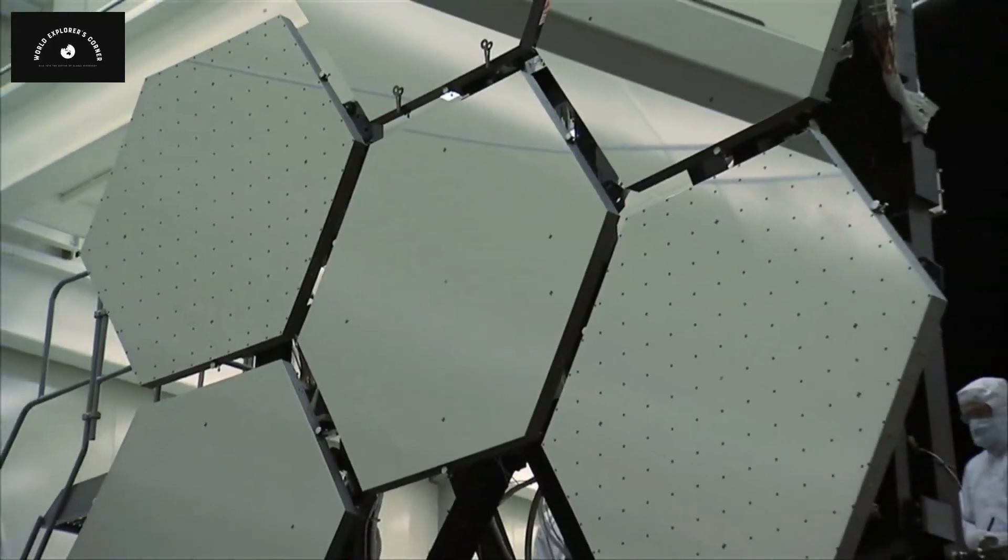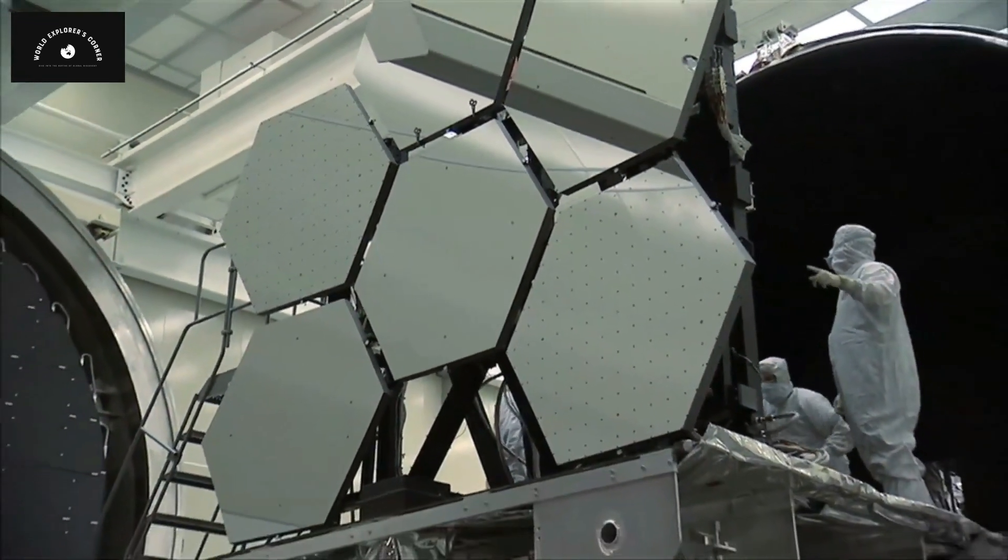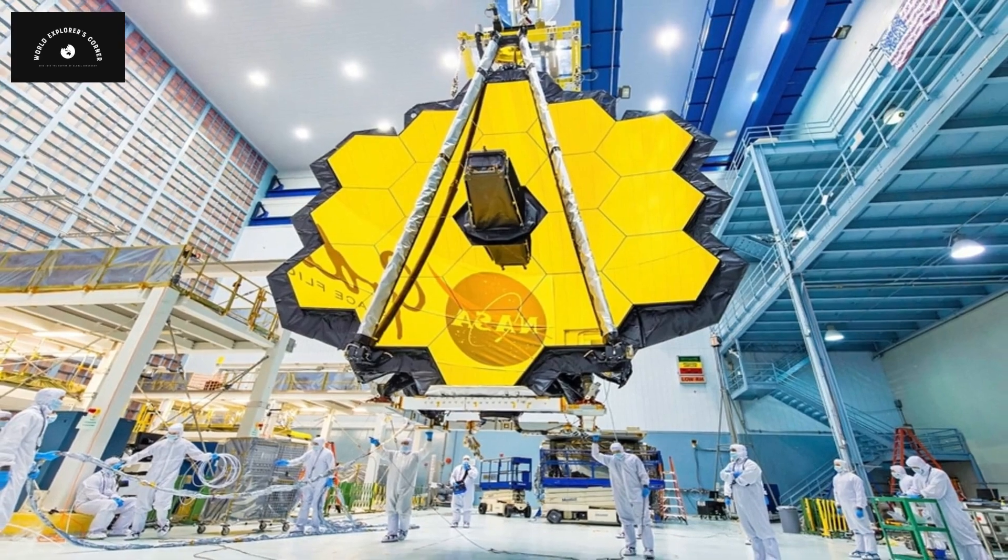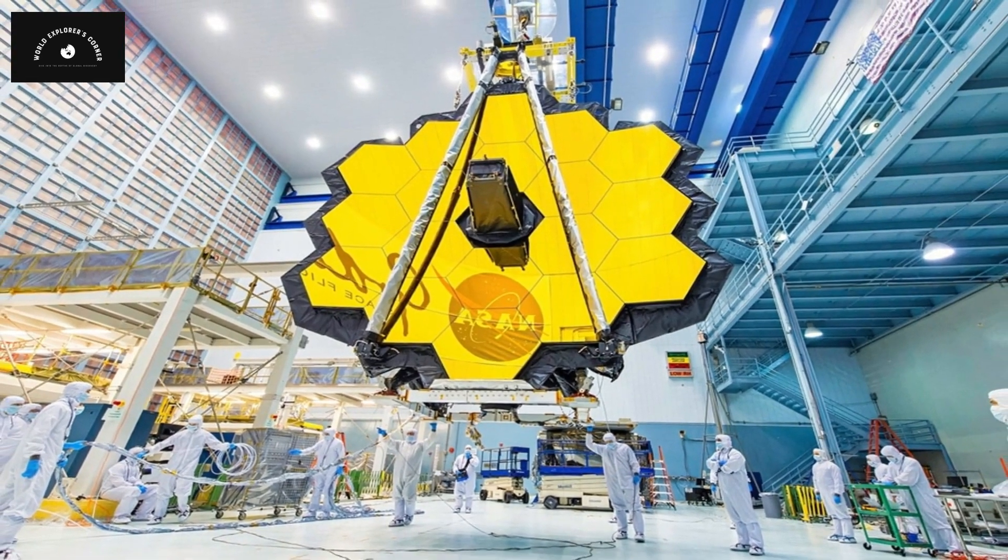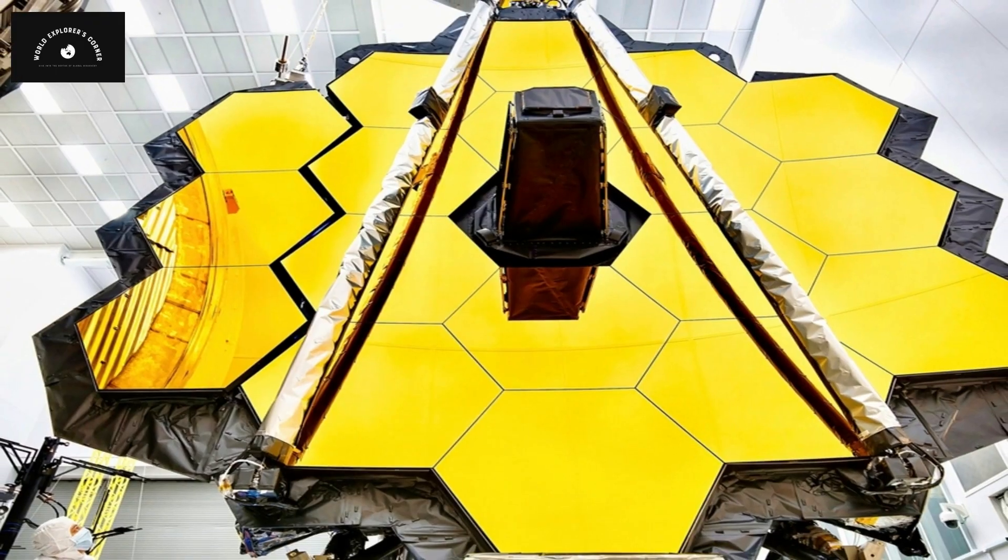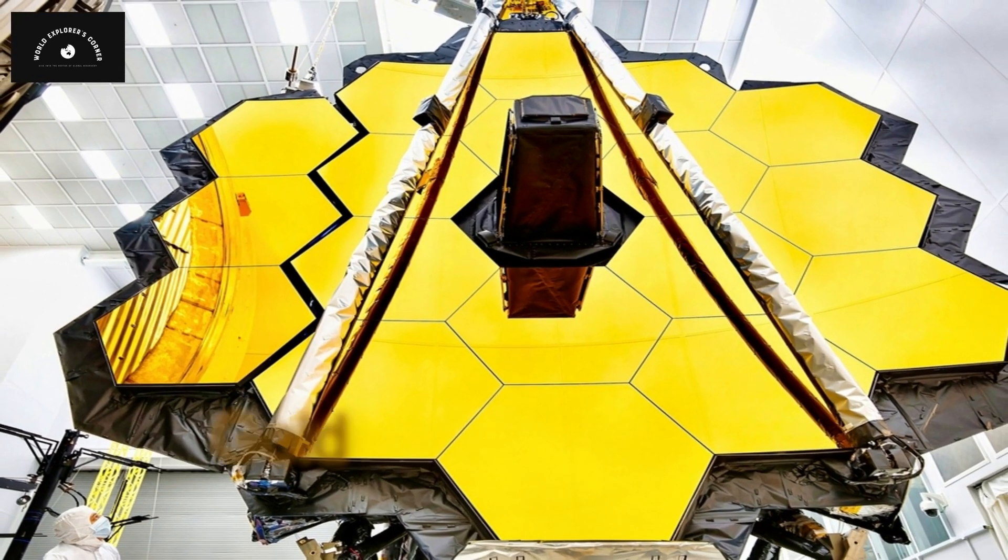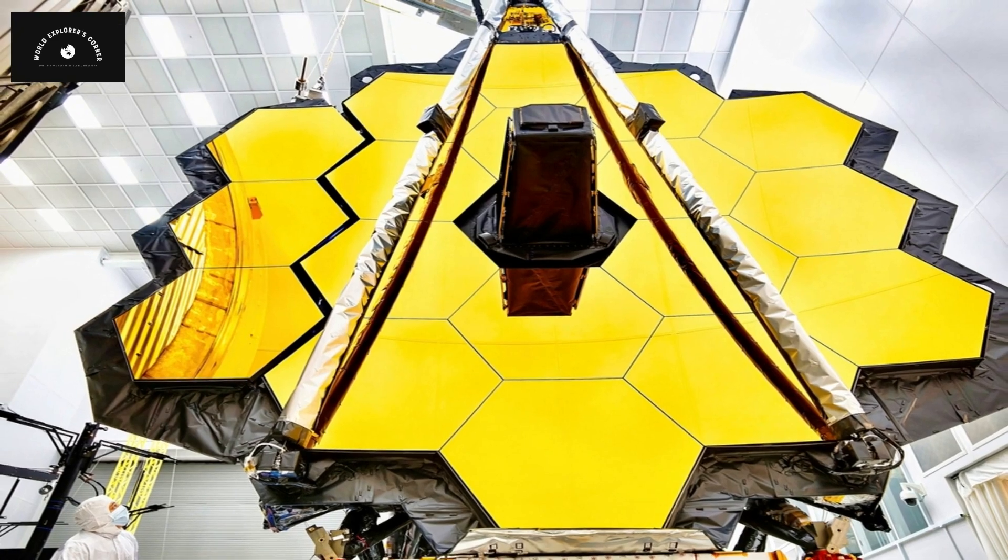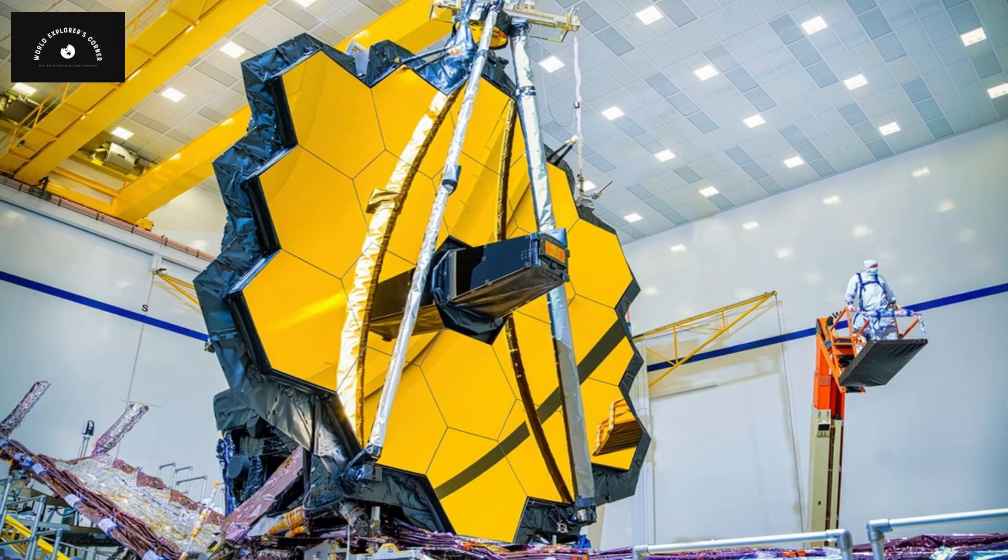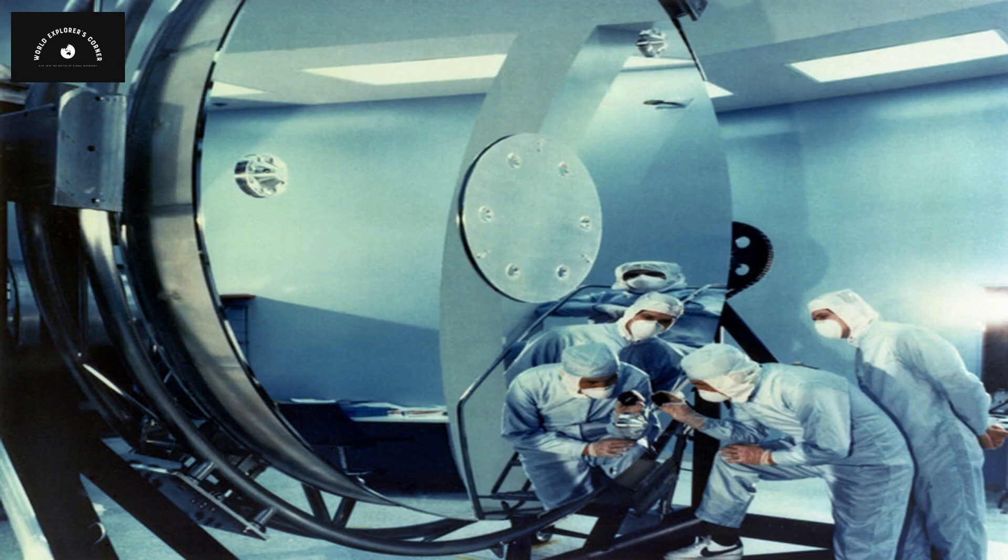The James Webb Space Telescope is the most powerful telescope ever constructed by humans. It can peer into the farthest reaches of the universe's past, beyond what the Hubble telescope can observe. The primary reason for this capability is its gold-coated mirrors, which can capture even the faintest light. James Webb's gold mirror has a diameter of 6.5 meters, while the Hubble telescope's mirror is only 2.5 meters across.